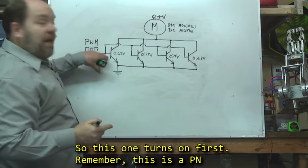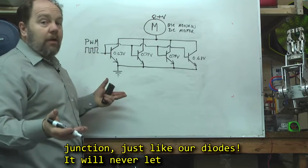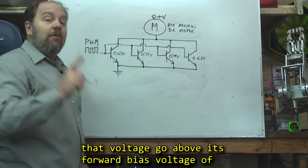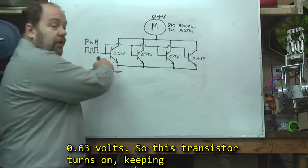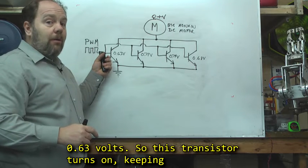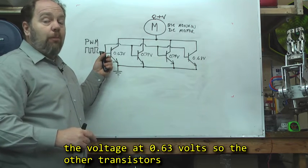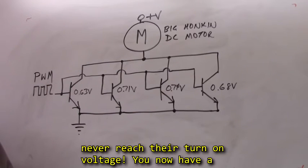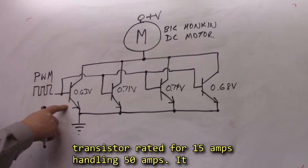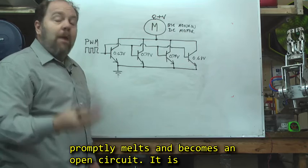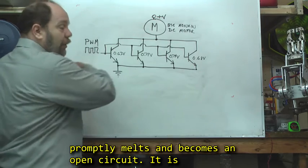So this one turns on first. Now remember, this is a PN junction, just like our diodes. It will never let that voltage go above its forward bias voltage at 0.63V. So this transistor turns on, keeping the voltage at 0.63V, so the other transistors never reach their turn on voltage. You now have a transistor rated for 15 amps handling 50 amps. It promptly melts and becomes an open circuit. It is now out of the picture.